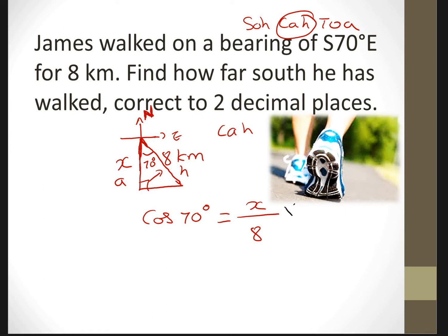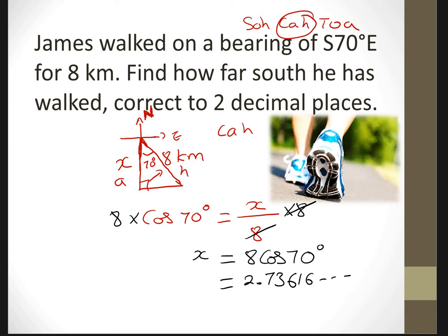Now multiply both sides by 8 — that cancels out — so x equals 8 cos of 70 degrees. If you put that in your calculator, you should get 2.73616... We want 2 decimal places. The digit after the second decimal is 6, which is greater than 5, so we round up: 2.74 kilometers. Therefore, he has walked 2.74 kilometers.